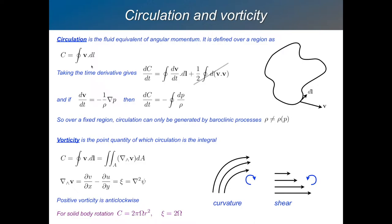What we're interested in is how do you generate circulation — what can you do to give it a time derivative? Take the time derivative of this equation. D by dt of the circulation is the integral of the acceleration dot dl, plus another term which comes out to be a half of d(V dot V). Now, V dot V is just a scalar, so the line integral around a circuit of a scalar is just zero — it disappears. So it is the line integral of the acceleration — the rate of change of circulation.